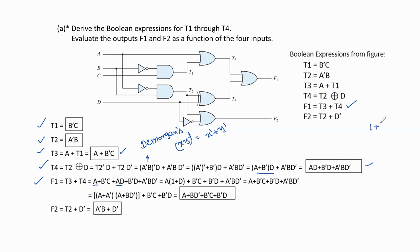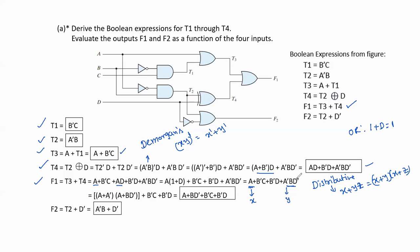Simplifying using Boolean algebra: a is common in the a and a·d terms, giving a(1 + d). Since 1 + d = 1 by the OR operation identity, this becomes a. Applying the distributive property (x + yz = (x+y)(x+z)) to handle the a and a' terms, and using the inverse law a + a' = 1, the final simplified expression for f1 = a + b'd + b'c + a'b·d'.